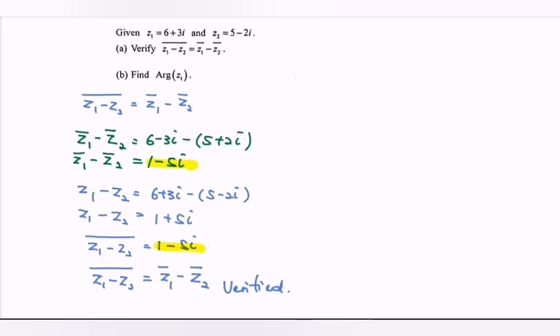Continue, find the argument of z sub 1. Step number 1, must have the diagram. Find the location for z sub 1, which is 6 plus 3i. This is located in the first quadrant.